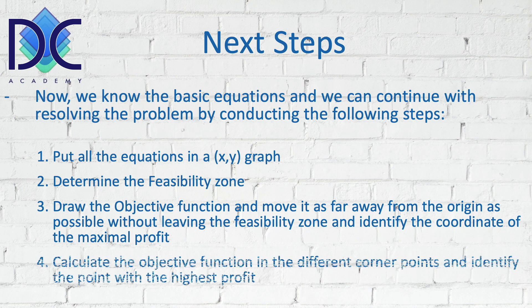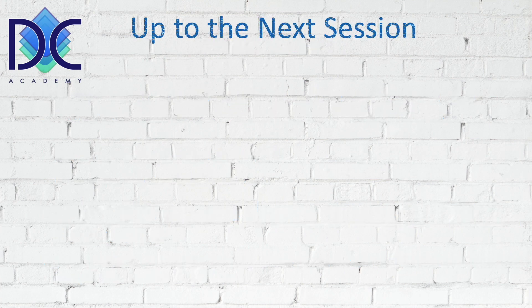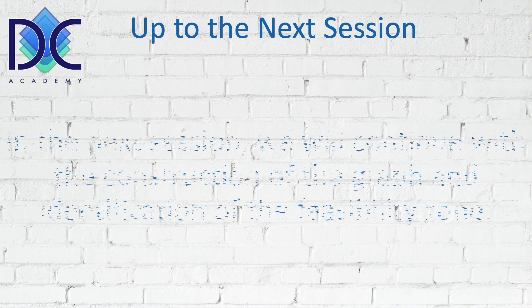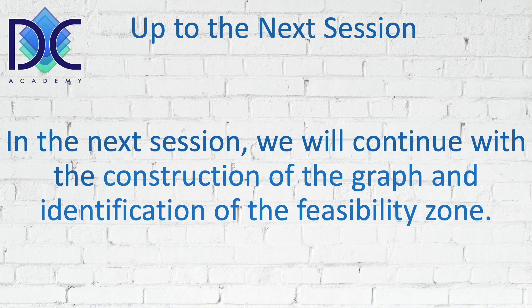Another way to find the optimal solution is to calculate the objective function at the different corner points and identify the point with the highest profit. Basically this was the first step in resolving a maximization problem. In the next video we are going to construct the graph and identify the feasibility zone that will be used to find the optimal solution.